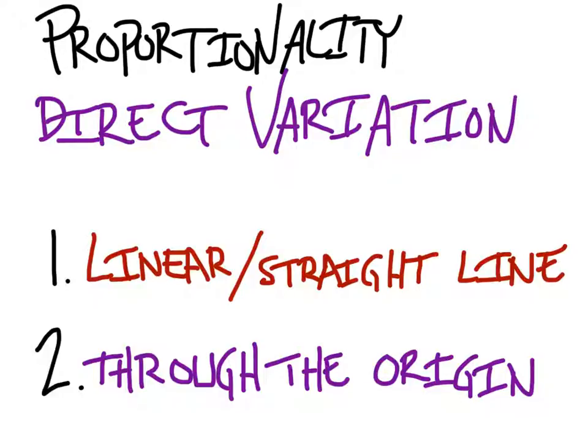Now, in addition to this, if it is a direct variation, it's going to ask for the slope, but it will not call it slope. It's going to call it the constant of variation or the constant of proportionality. Those are the same as slope. We're more commonly going to call it slope, not rate of change.